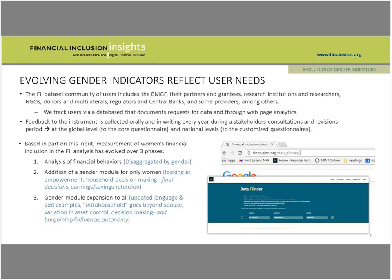Because of these requests and website analytics, we are able to track who's using the data and as a result get feedback on how we should update the survey instrument year to year. The gender module, in part as a result of that feedback, has evolved over time. Initially, we were just collecting general financial behavior information and then disaggregating by gender — looking at how access was different for men and women, or what mobile phone and smartphone ownership looks like for men and women. In the last few years, we added a gender module with input from the gender team at Gates, asking women questions about empowerment, household decision-making, earnings, and savings retention.